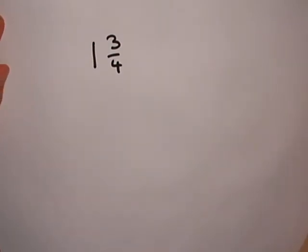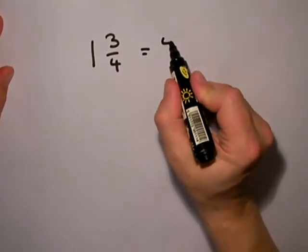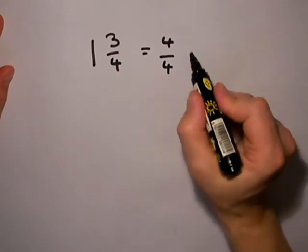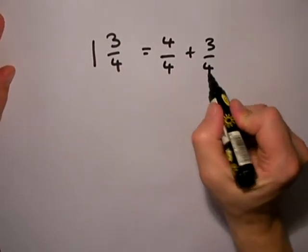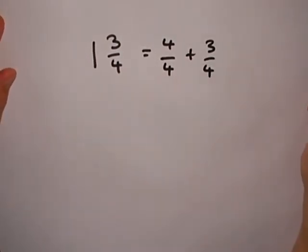What we need to remember is that 1 whole 1 is made up of 4 quarters. I could write it like this, that 1 whole 1 is 4 quarters plus the 3 quarters that I've got already.